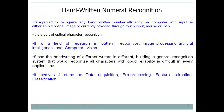This is again a field of research in the domains of pattern recognition, image processing, AI, and computer vision. Since the handwriting of different persons is very different — some write in cursive, some in normal style — everyone has different handwriting. Therefore, building a generalized recognition system that recognizes all characters with good reliability is difficult.